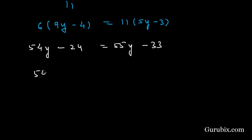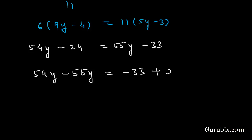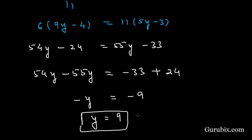Taking 55y to the left hand side gives −55y, and taking −24 to the right hand side gives +24. So we have 54y − 55y = −33 + 24, giving −y = −9, which means y = 9.